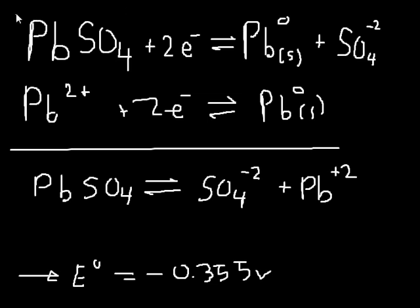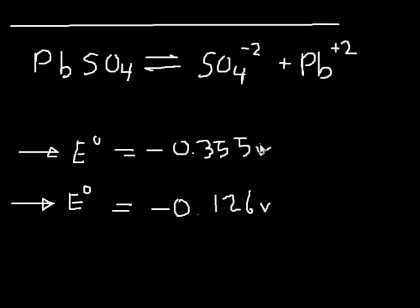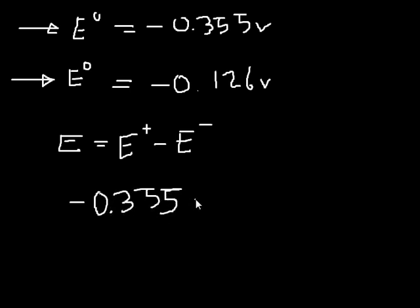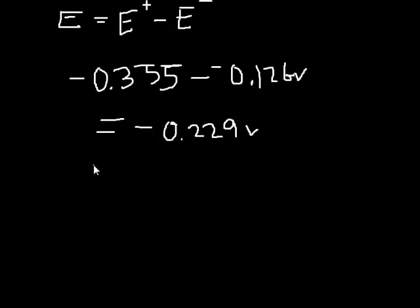The top reaction we're going to assign positive and the bottom reaction we're going to assign negative. If you just remember this equation, take the positive and subtract the negative from it. So overall the reduction potential for this reaction is negative 0.229 volts. You might notice right away the sign is negative, so that means it is not going to be favorable.